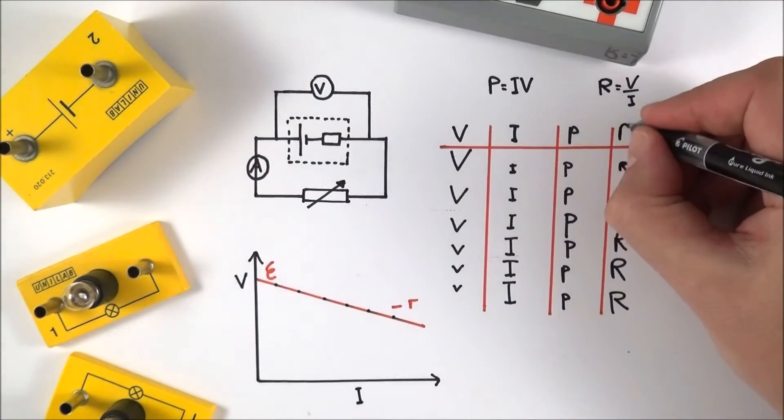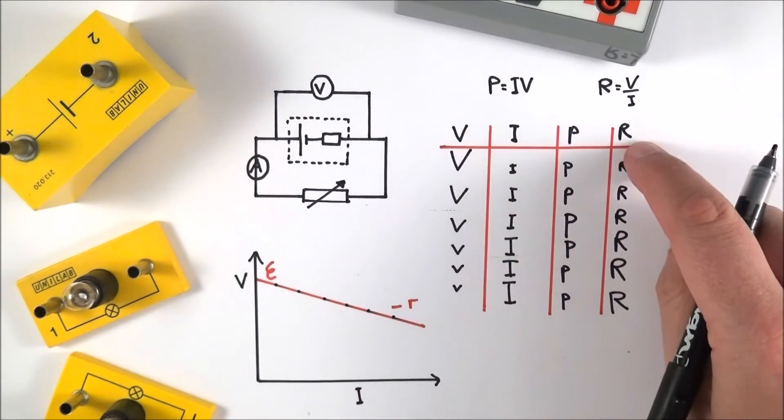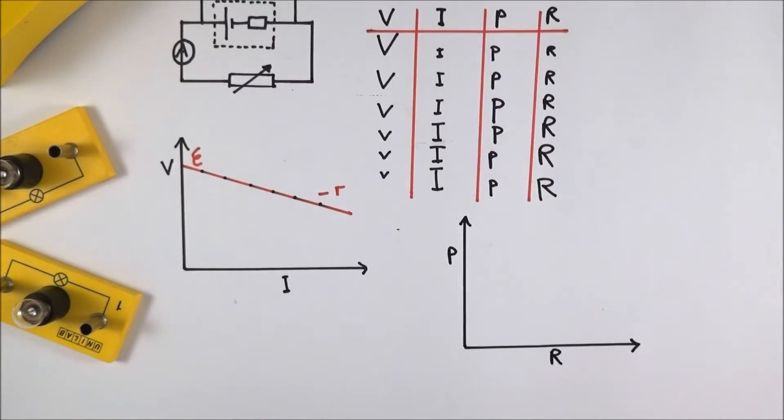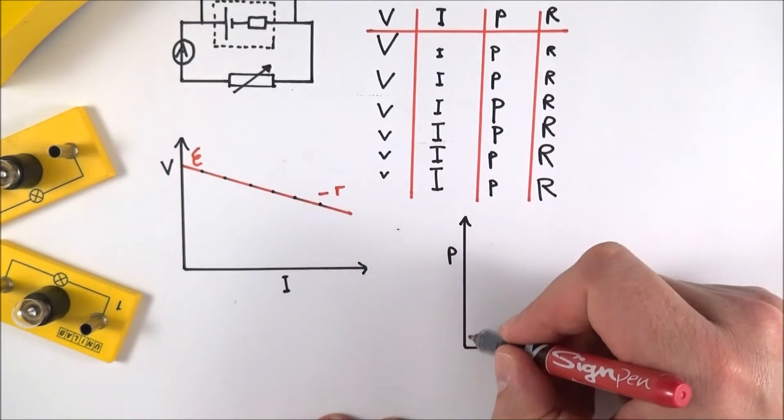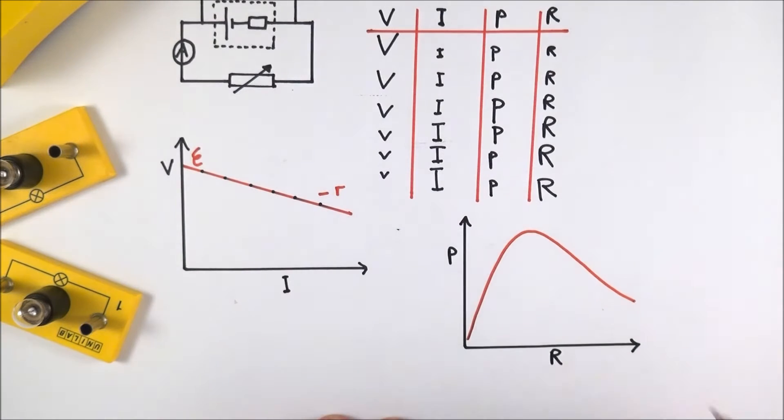You can plot a graph of power and resistance like so. What you'll find is, depending on the kind of cell that you've got, you might find something that looks a bit like this.